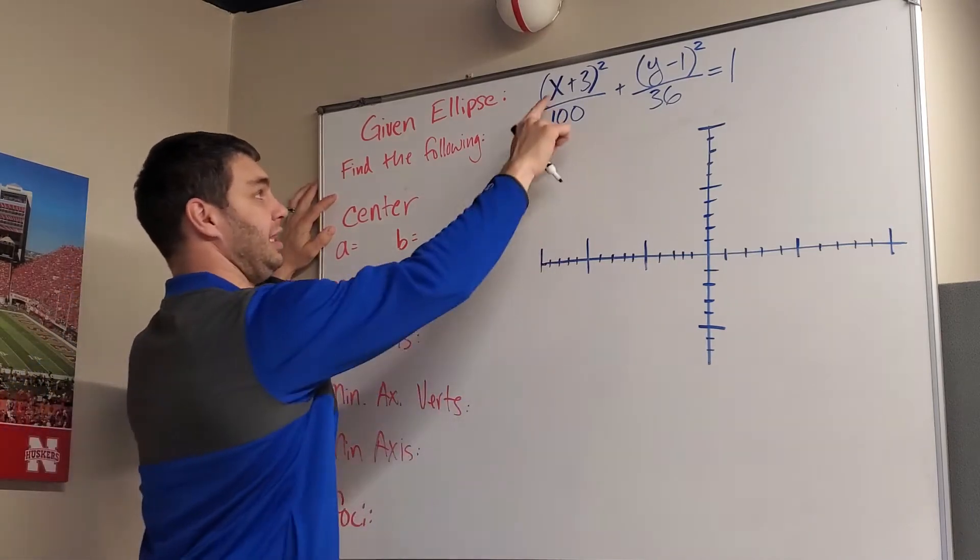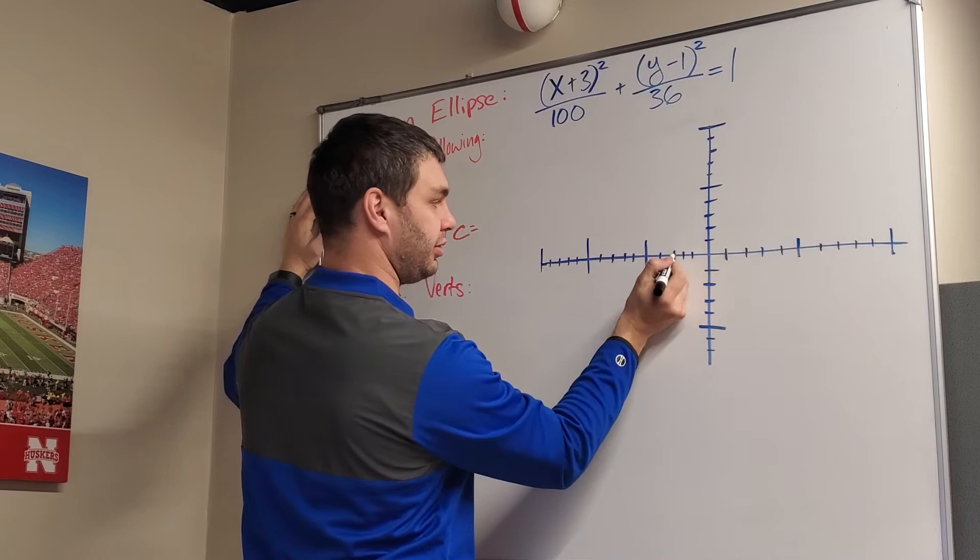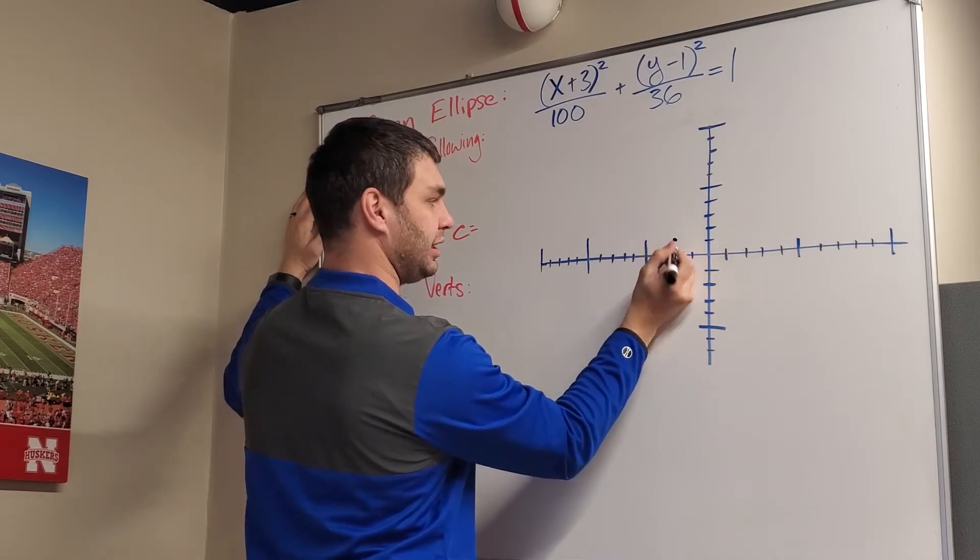So right away, we can find our center. It's going to be at (-3, 1), so (-3, 1). I'm going to put a dot there. I'm going to graph this as I go.